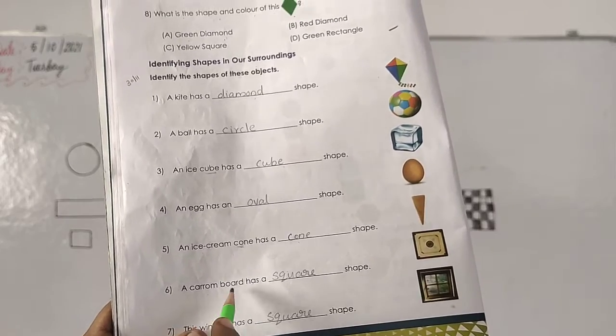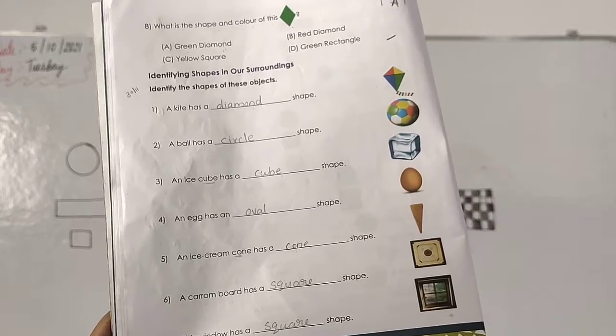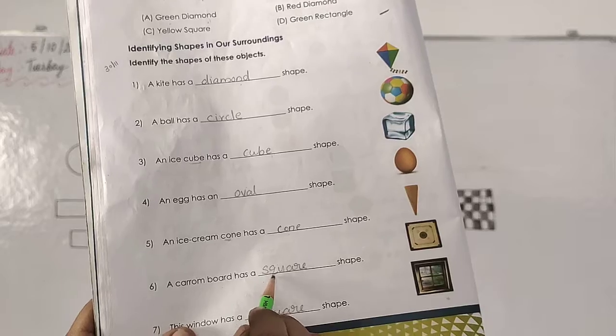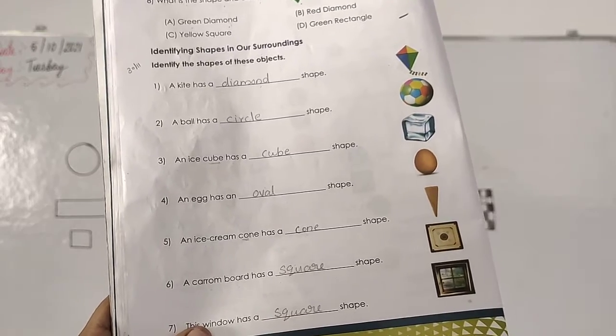Then a carom board has a dash shape. Square. Write down square. S-Q-U-A-R-E square.